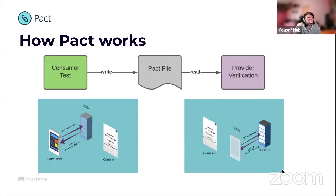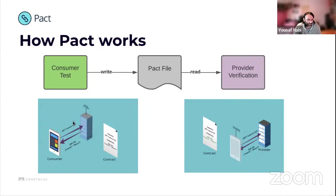If all those elements are in play — the consumer issues the correct request, the provider returns its response, and the consumer's unit test assertions pass — the PAC framework will serialize the contract into a PAC file. As long as the mock provider has been issued the correct request with no mismatches, it will be eligible to write those interactions to a PAC contract. Within the user's unit testing framework, there would normally be assertion guards on the system under test.